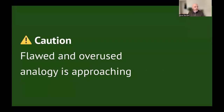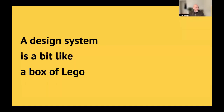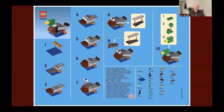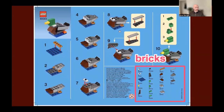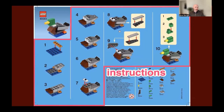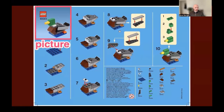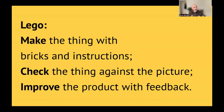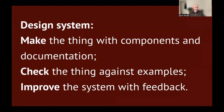Caution! A flawed and overused analogy is approaching at high speed. A design system is a bit like a box of Lego. Here's a picture of some Lego instructions — a cute little duck. It contains the bricks, how many and what types, the instructions as numbered steps, and a picture of the finished duck. With Lego, it's three steps: make the thing with the bricks and instructions, check the thing against the picture, and sometimes improve the product with feedback. Applying this to design systems: make the thing with the components and documentation, check the thing against the examples, and improve the system with feedback.